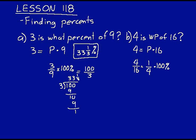And then we'll have 100 over 4. And 4 is a common factor there. 100 over 4 is just equal to 25%. So 4 is 25%. It's 1 fourth of 16.